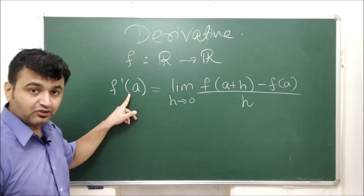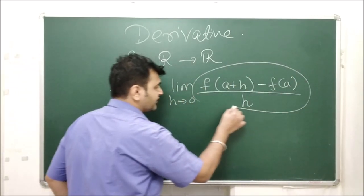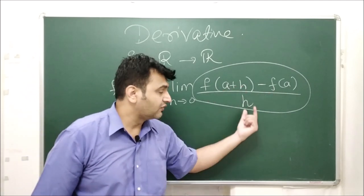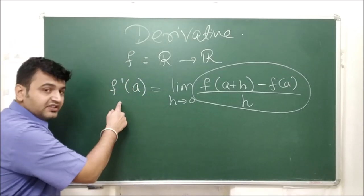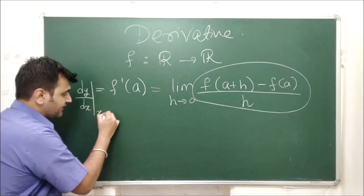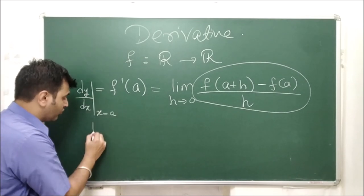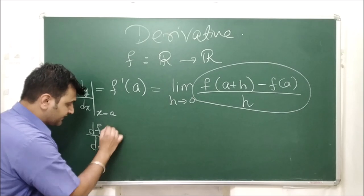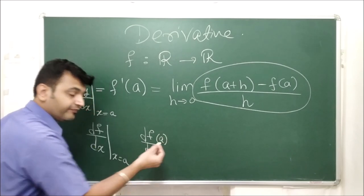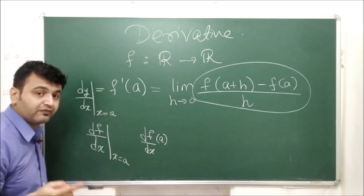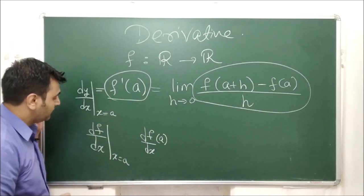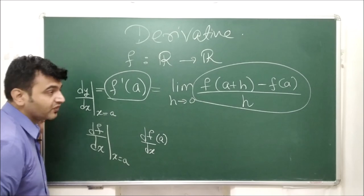The derivative of a function at a point, called f'(a), is the limit of a ratio: the limit of [f(a+h) - f(a)] / h as h → 0. Other notations include dy/dx at x = a (where y = f(x)), df/dx at x = a, or df upon dx at a. I'll mostly use f'(a) as it is convenient to write.